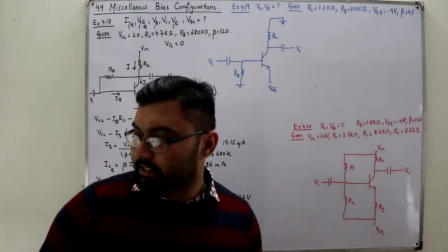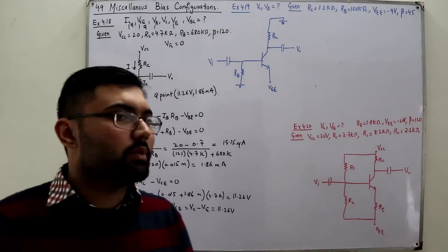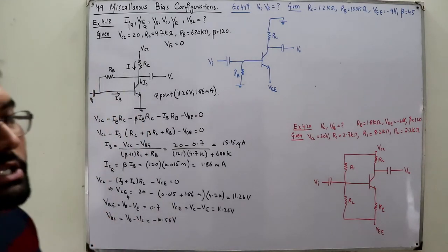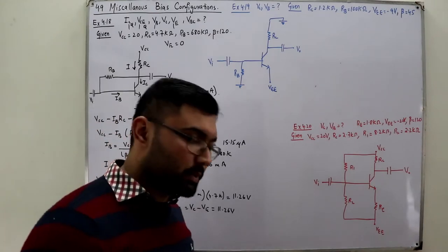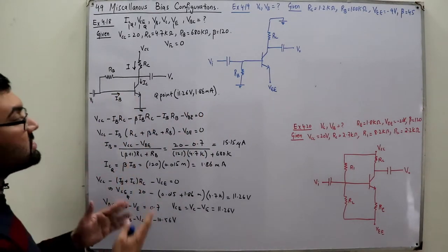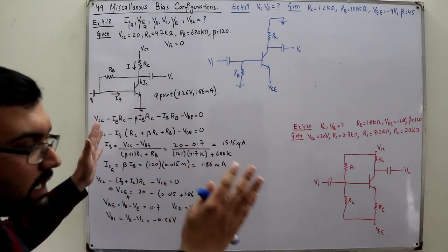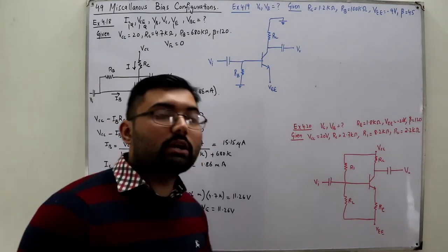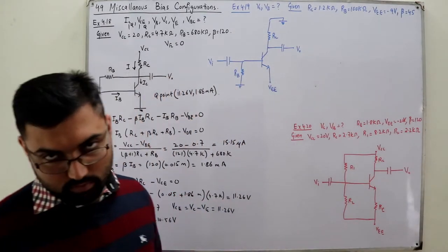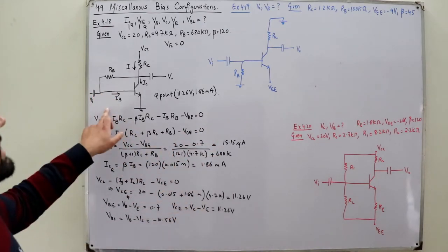These sorts of problems are called analysis problems — because the circuit and its parameters are given, and you are asked to find out the unknown quantities, i.e., to analyze the circuit. Example number one is done. Moving on to example number two, which is a fixed bias configuration.